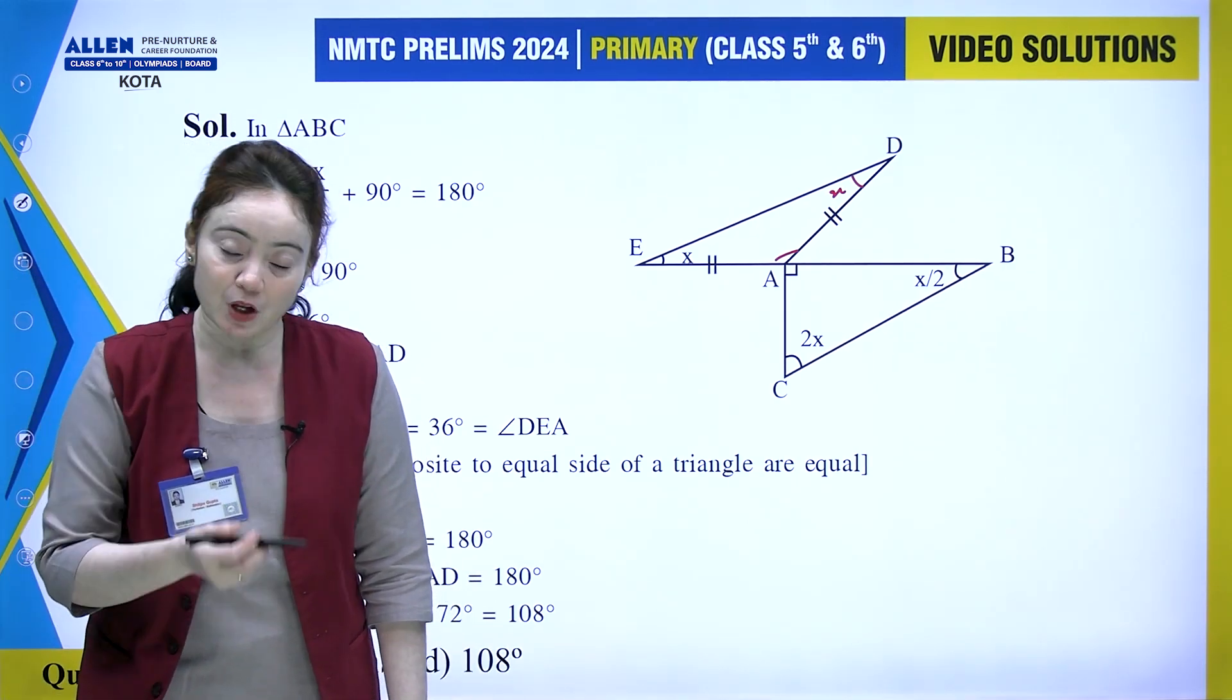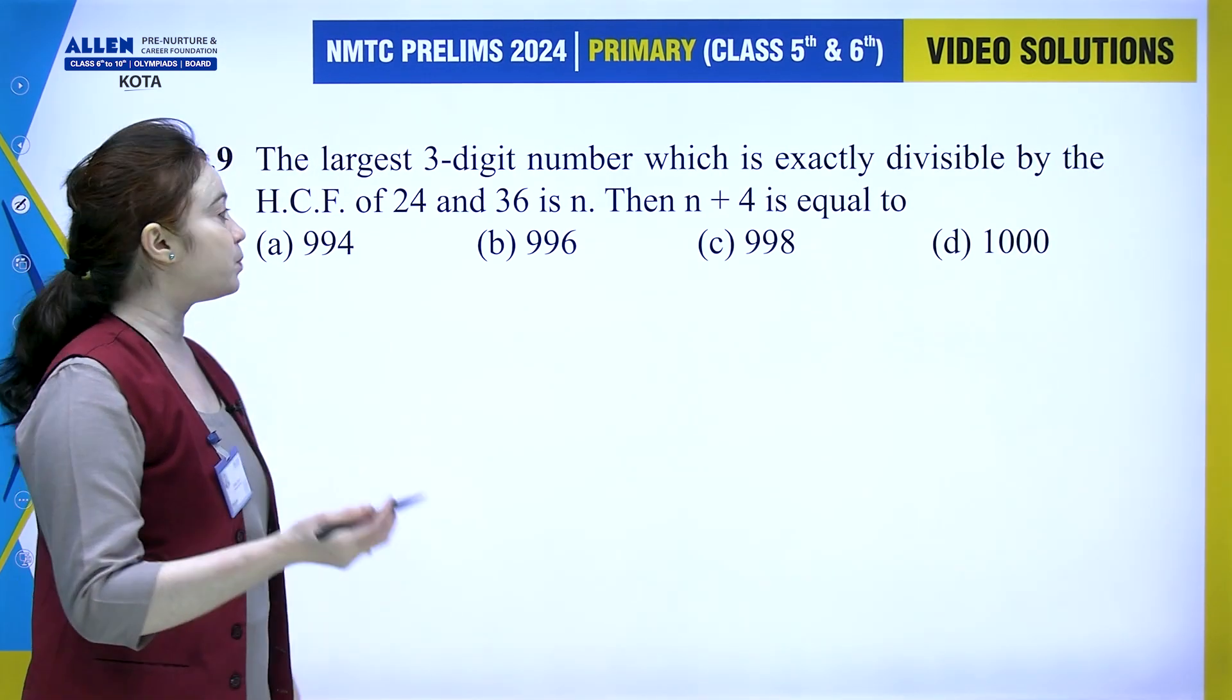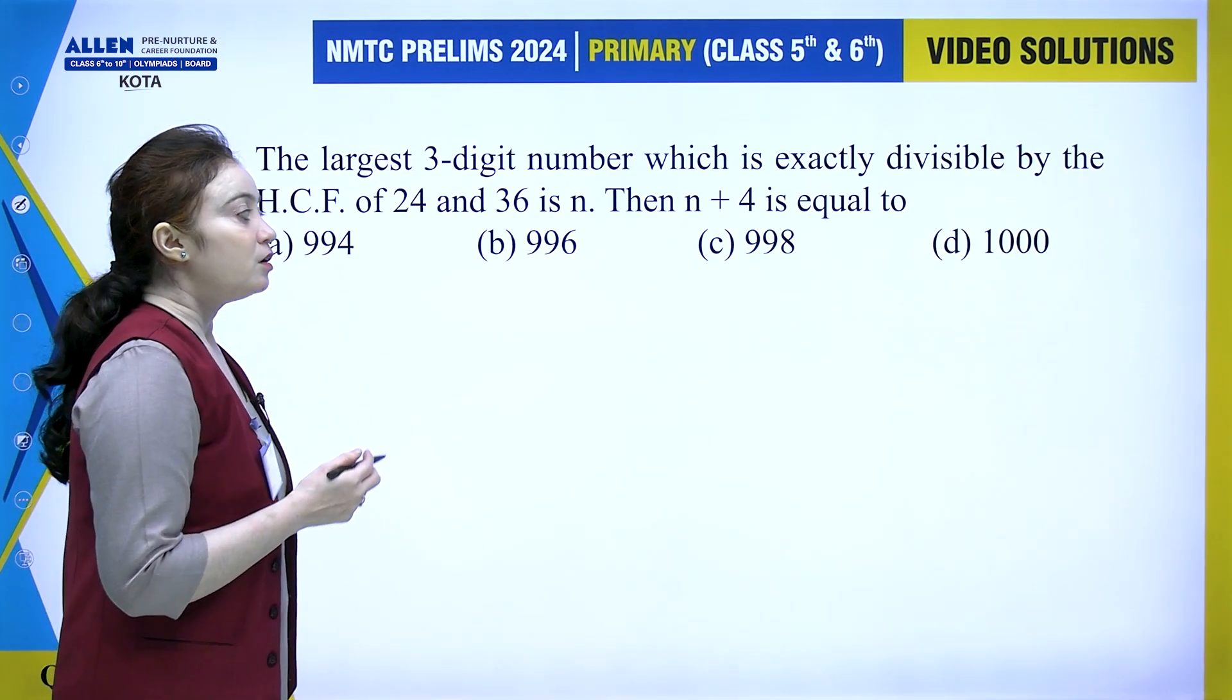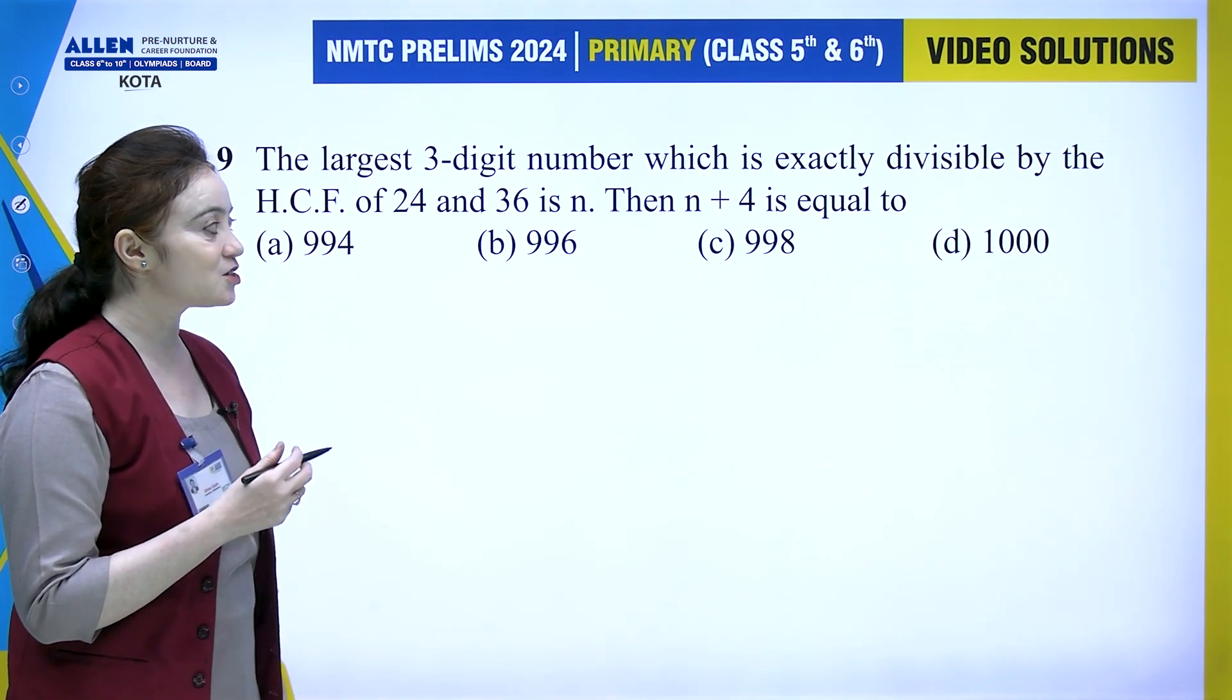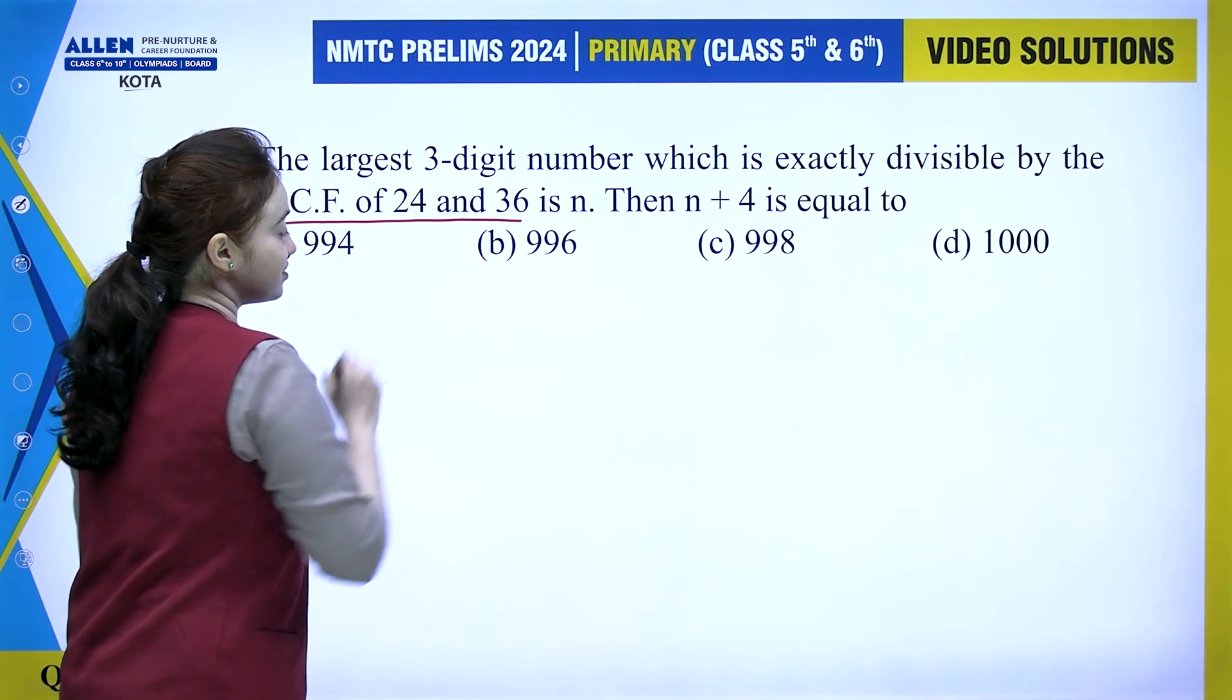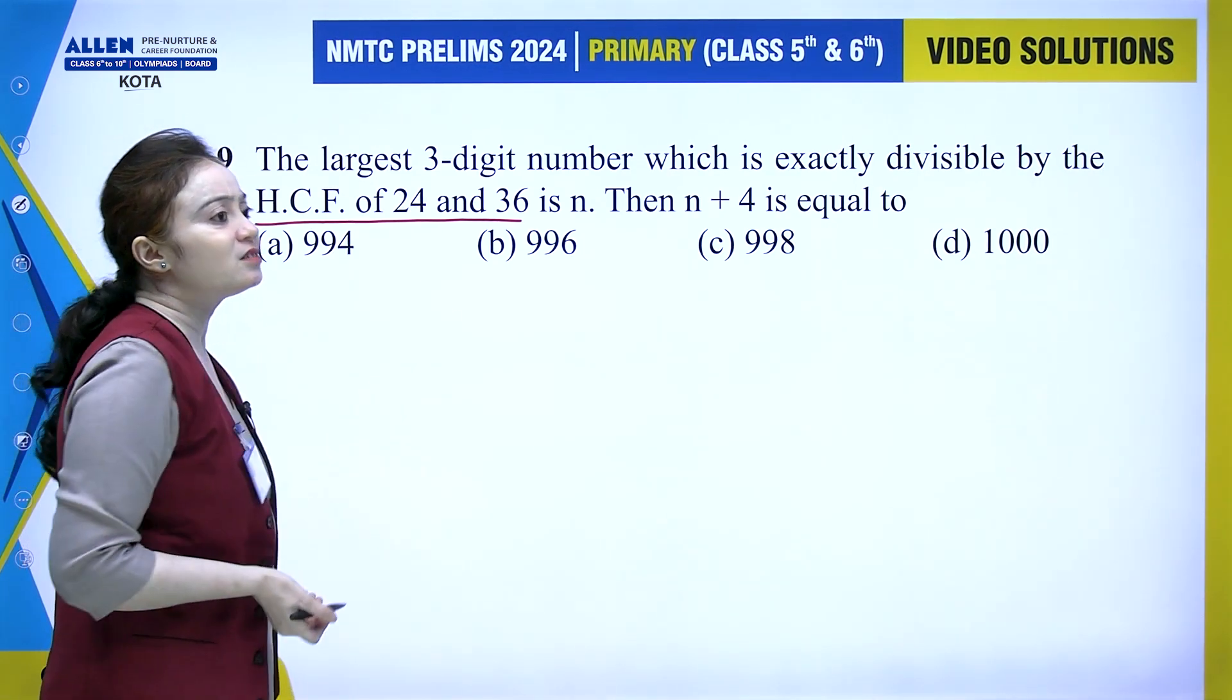Next problem: The largest three-digit number which is exactly divisible by the HCF of 24 and 36 is n. The value of n plus 4 is equal to what? First we need to find the HCF of 24 and 36.